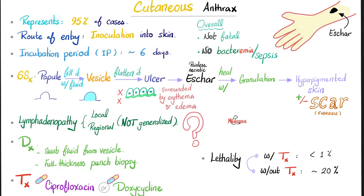Can you give me at least three causes of generalized lymphadenopathy? Let me know the answer in the comment section. To diagnose cutaneous anthrax, take a sample from the skin — you can swab the fluid out of the vesicle, or do a full-thickness punch biopsy of the eschar. Management: oral cipro or oral doxy. The lethality is less than 1% with treatment and about 20% without treatment.